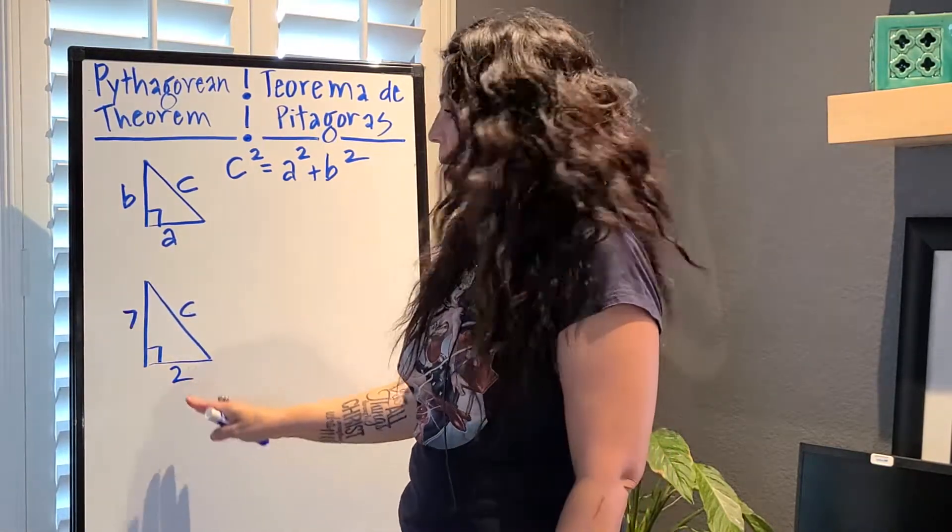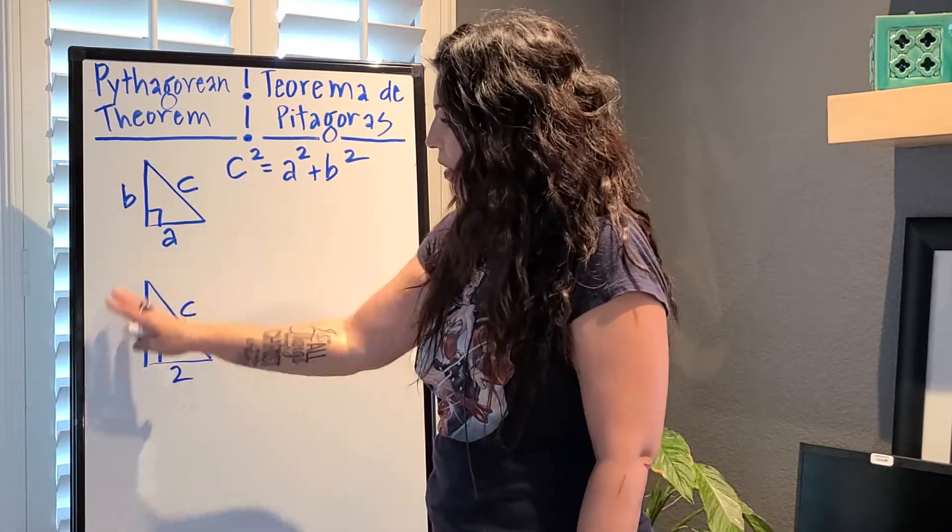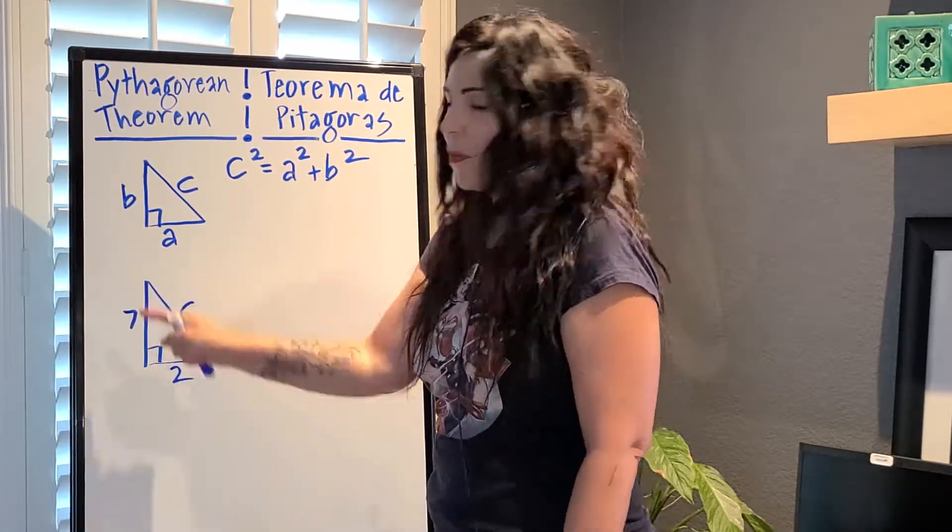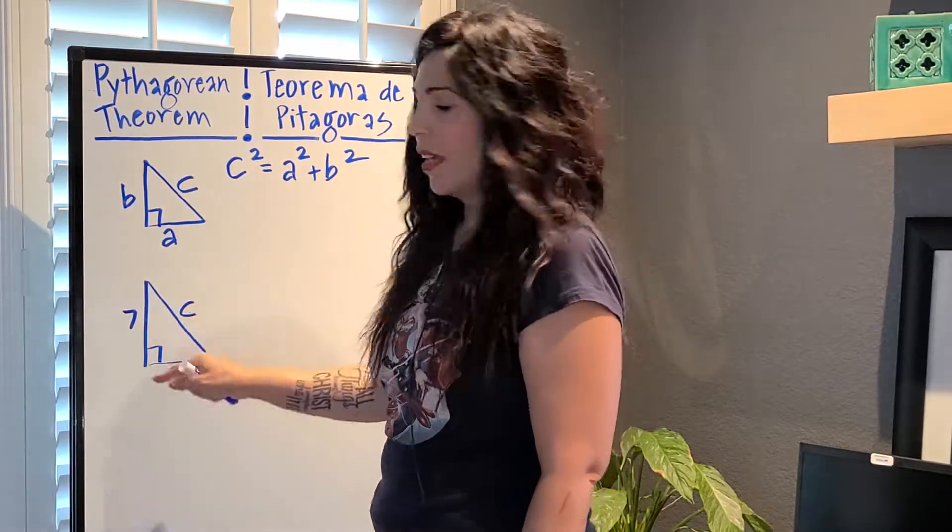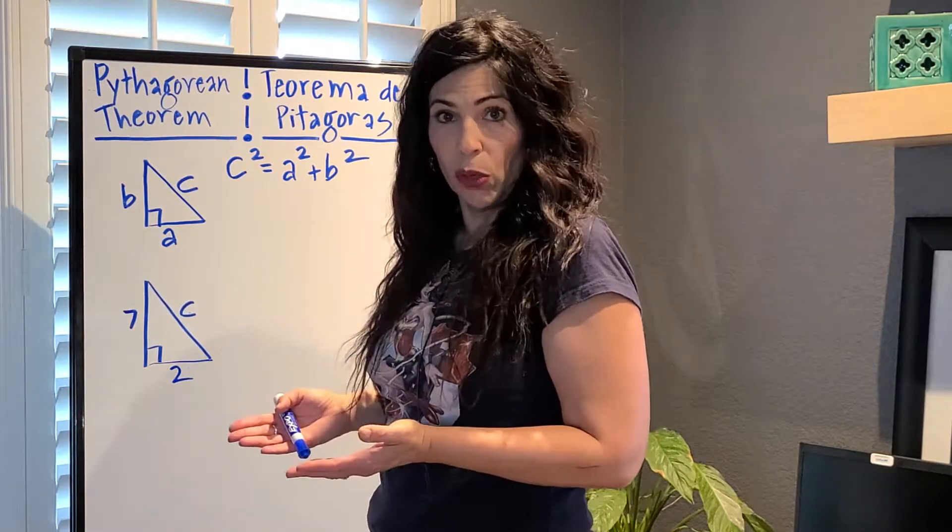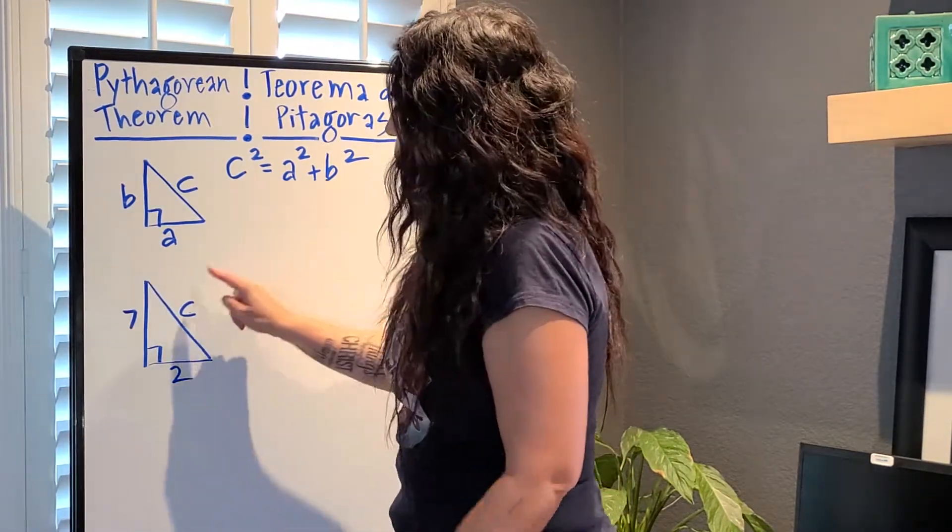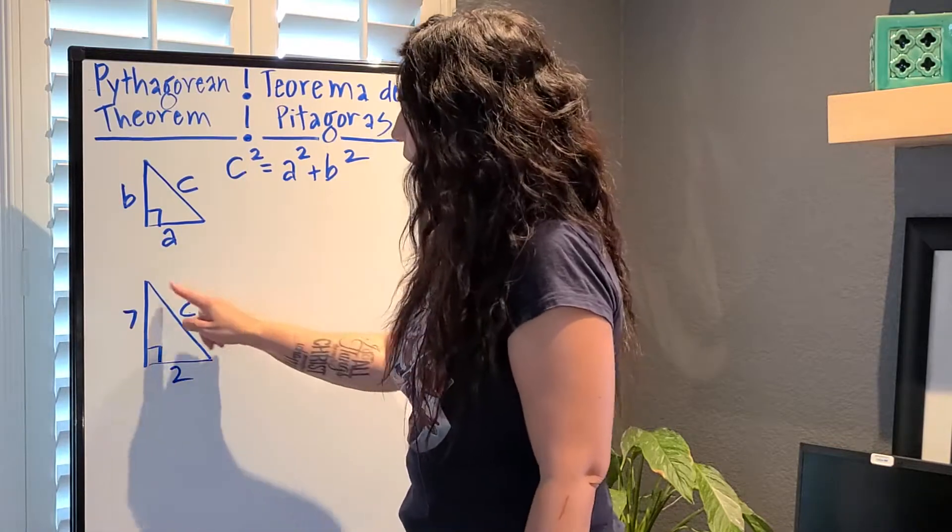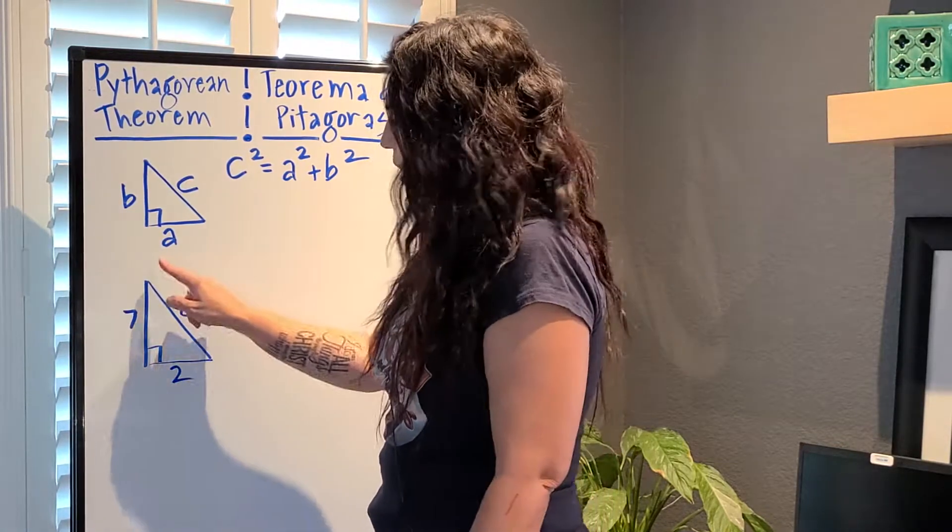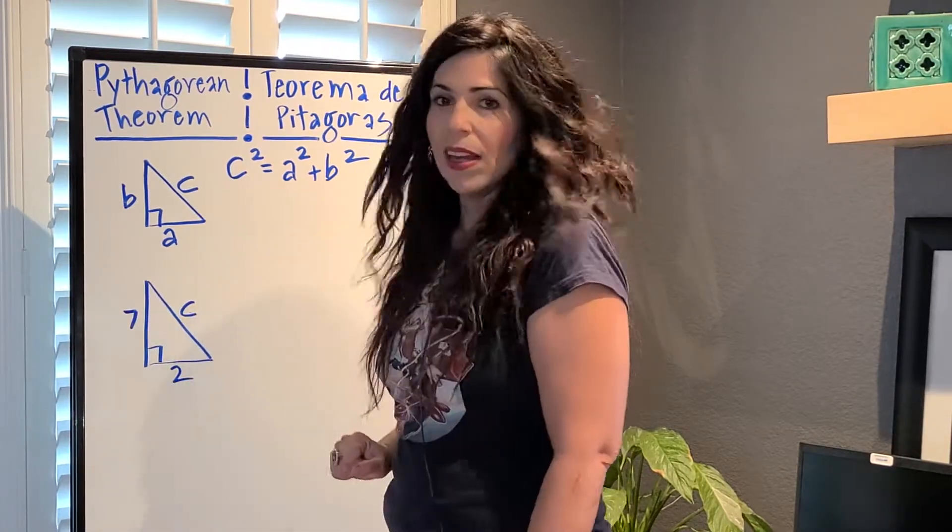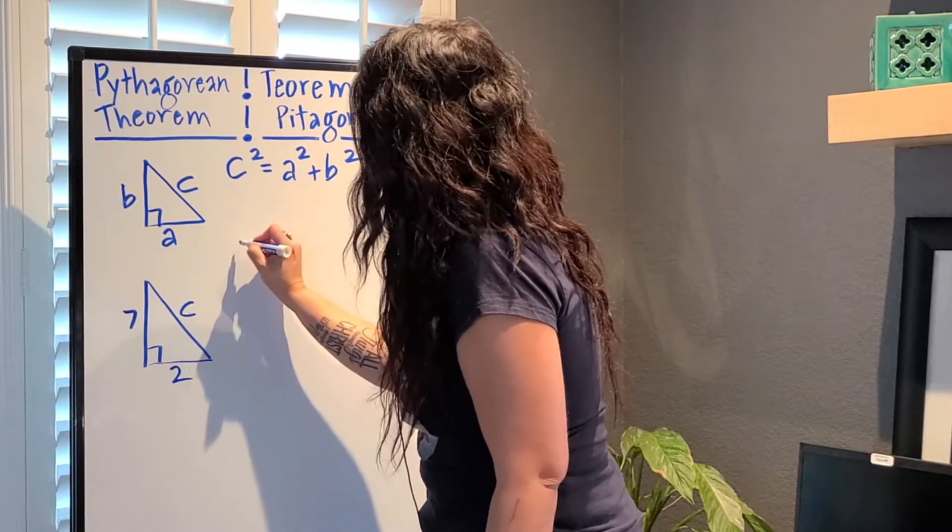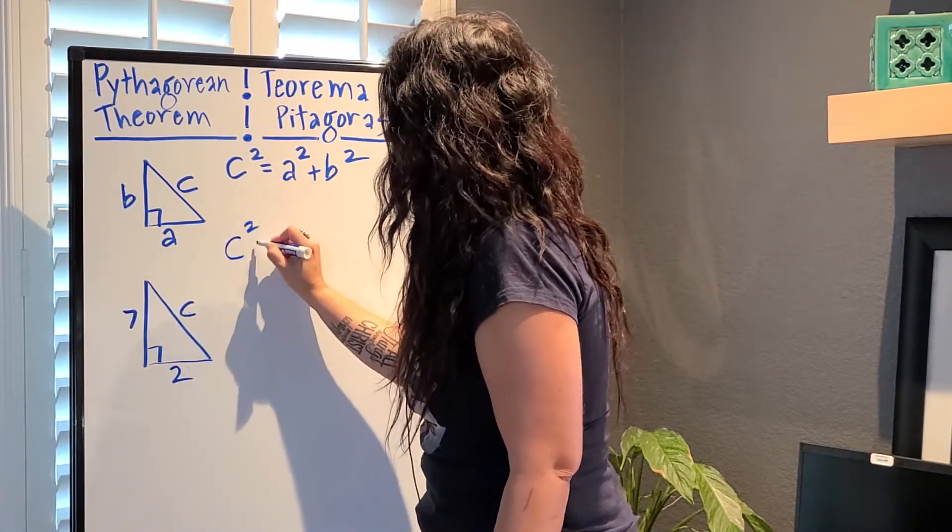So let's go ahead and apply it to this example I have here. I have a right triangle. Aquí tengo un triángulo y vamos a aplicar la fórmula a este triángulo para encontrar la C. So let's go ahead and apply it to this right triangle and we're going to find the value for C. The Pythagorean theorem states that if I have two of these values I can always find the missing one. Si tengo dos valores aquí, puedo encontrar el otro valor. So let's go ahead and use that. Vamos a aplicar la fórmula.